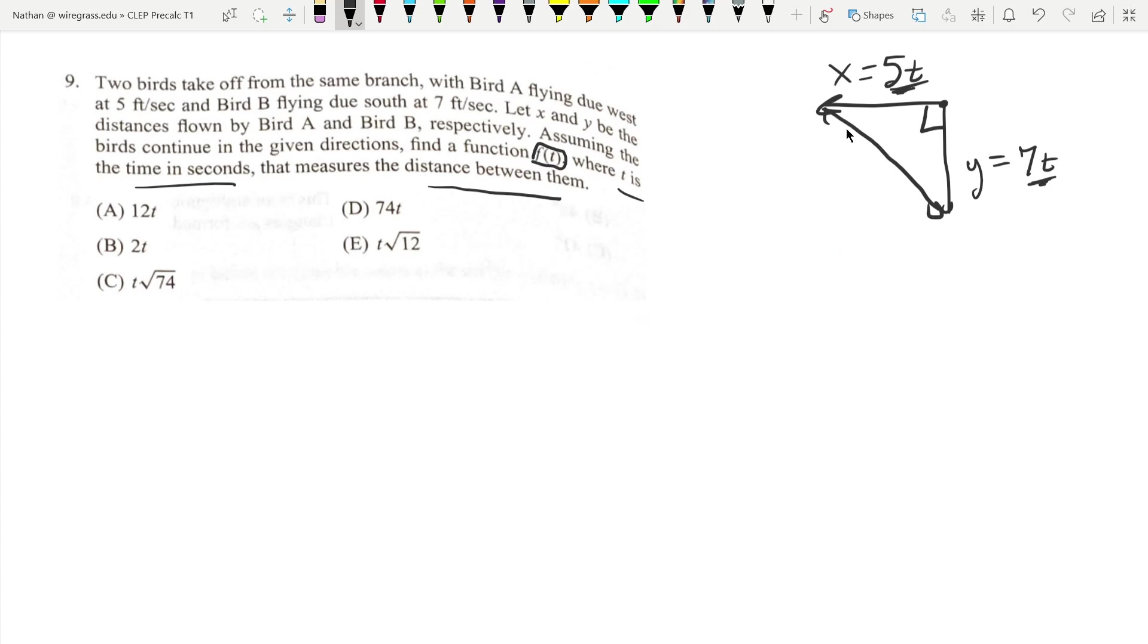Pythagorean theorem says that the distance between them is going to be five t squared plus seven t squared, and the square root of that.